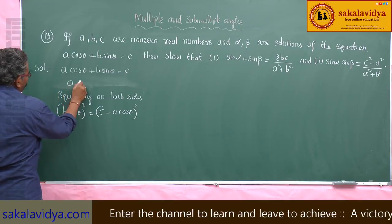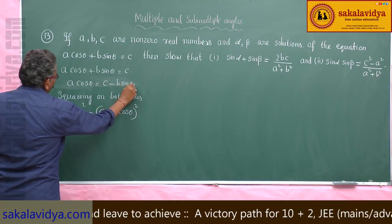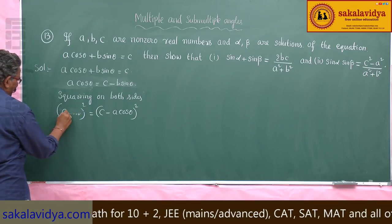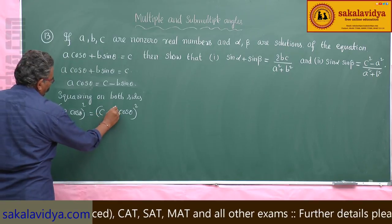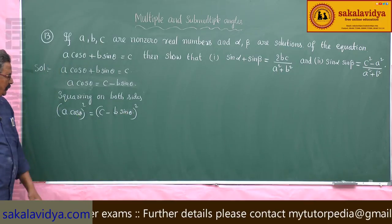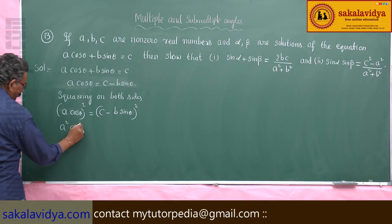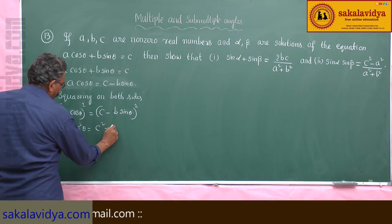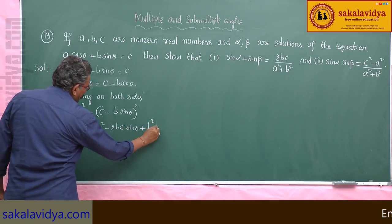A cosθ equals C minus B sinθ. Squaring both sides gives A² cos²θ equals C² minus 2BC sinθ plus B² sin²θ.